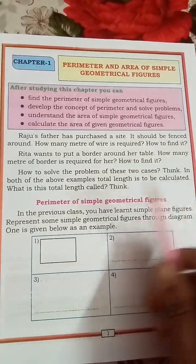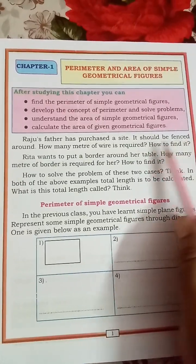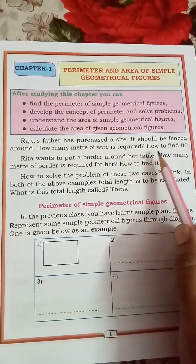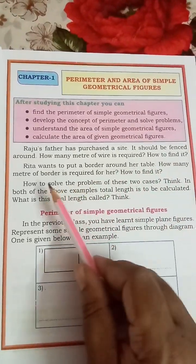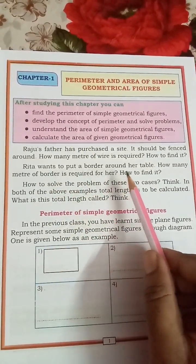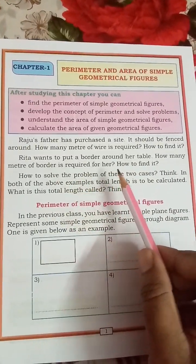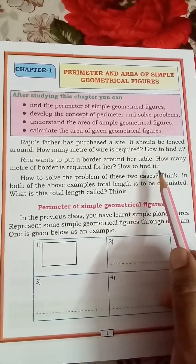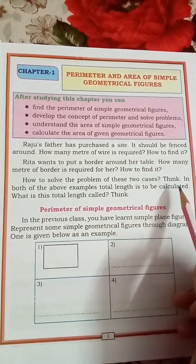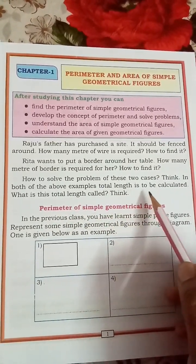Raju's father has purchased a site that needs to be fenced around — how many meters of wire is required? Rita wants to put a border around her table — how many meters of border is required? In both of these examples, the total length is to be calculated.